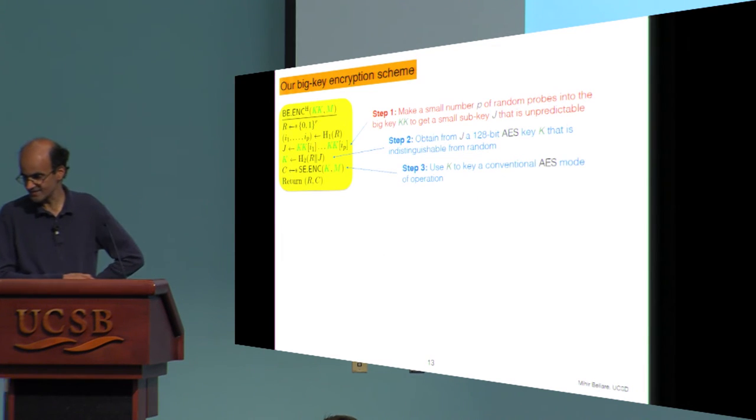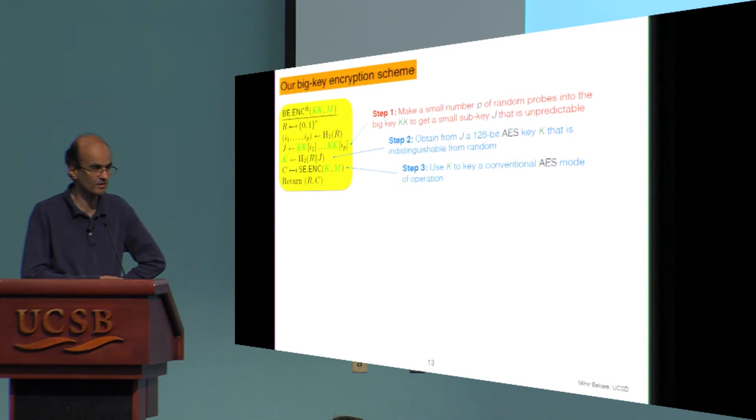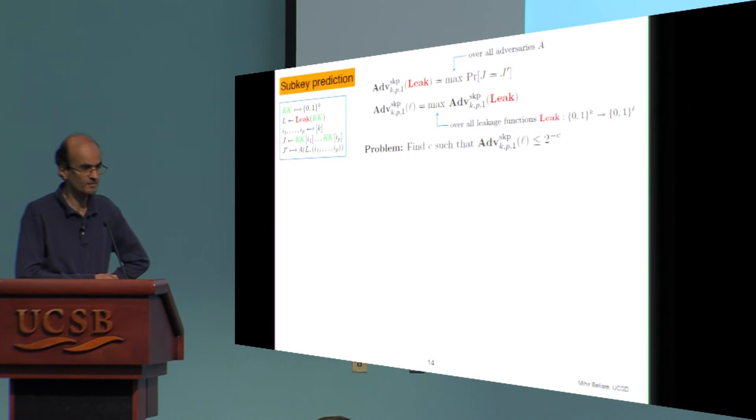So in the rest, I'll try to give you some more technical sense about the elements of this scheme. And it had three steps. The first one was by making a small number of probes into the big key to extract a key that's somewhat secure, unpredictable. And this is what's the subject of our sub-key prediction lemma.